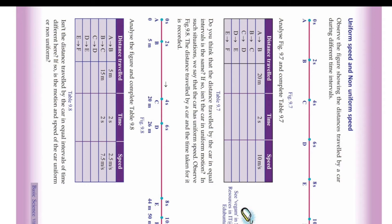A to B: distance is 5 meters, time is 2 seconds, so speed is 5 divided by 2 = 2.5 meters per second. B to C: distance is 15 meters, time is 2 seconds, so speed is 15 divided by 2 = 7.5 meters per second — speed has increased. C to D: distance is 6 meters, time is 2 seconds, so 6 divided by 2 = 3 meters per second — speed is decreasing.